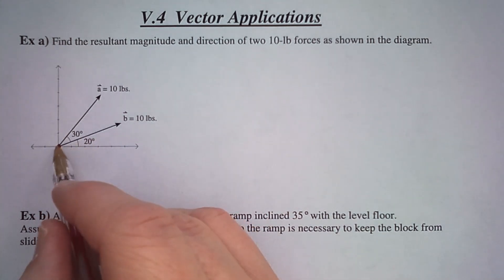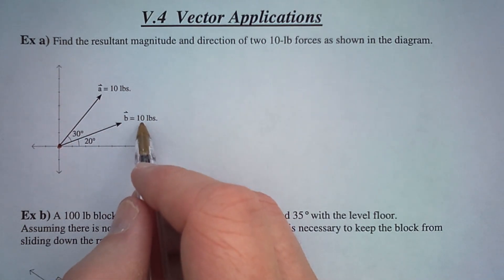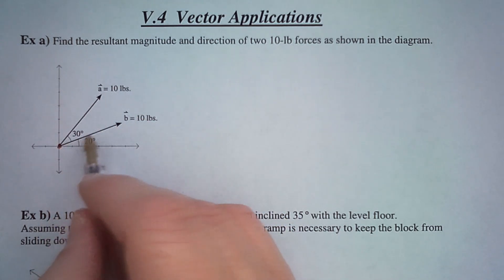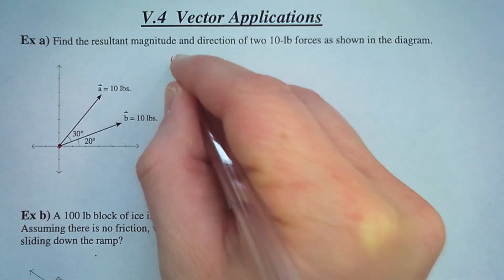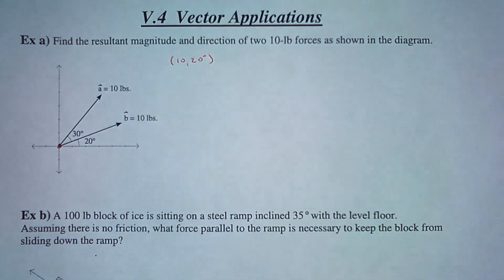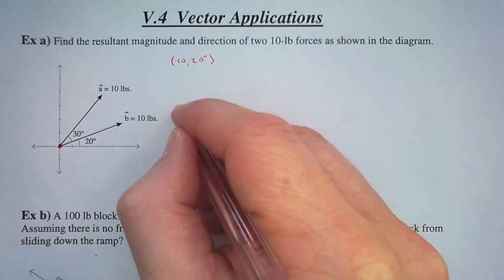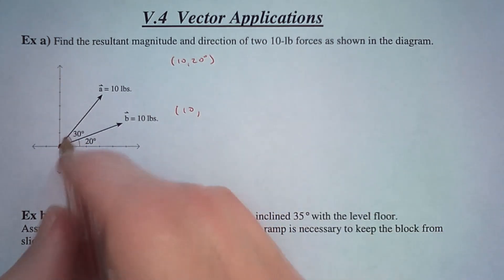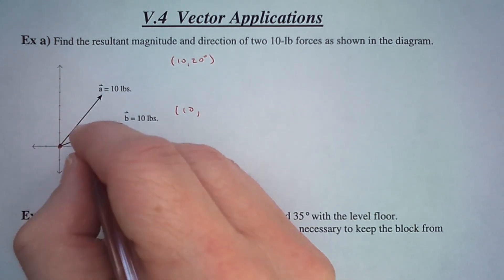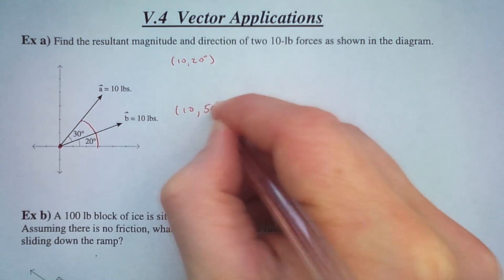Here we have a vector represented by 10 pounds of force. The magnitude of this vector is 10 and it is going at 20 degrees. So in polar form it would look like this: 10, 20 degrees. Now we have another one that is also 10 pounds of force, so it has a magnitude of 10. Its direction is not 20 or 30 — it goes all the way back and that is the combination of these two, which is 50 degrees.